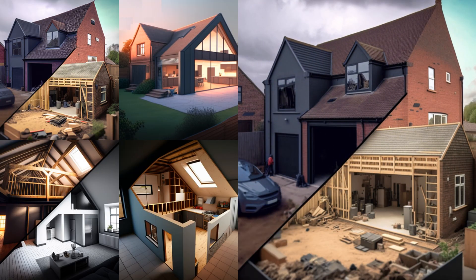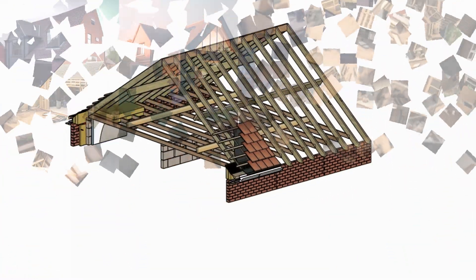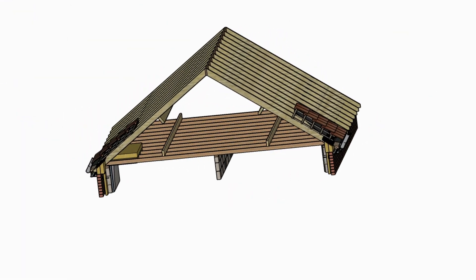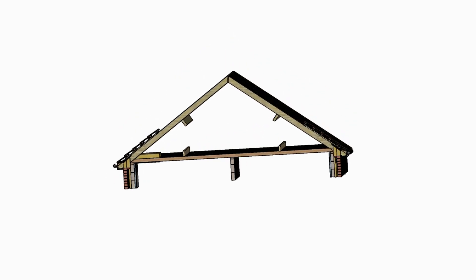Let's start by examining existing roof construction. The typical cut roof, as depicted in this animation, typically comprises of purlins, rafters and ceiling joists.